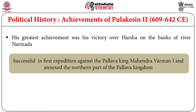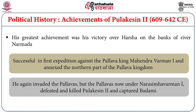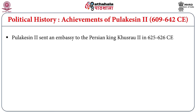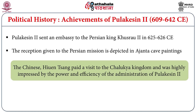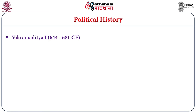The notable achievement of Pulakesi II which brought immense name and fame in the history of India is his victory over the great Harsha on the banks of the river Narmada, which became a boundary between these two dynasties. Pulakesi II also conducted a successful expedition over the Pallava king Mahendra Varman and occupied the northern portions of the Pallava kingdom. But in the second invasion, Pulakesi II lost his life at the hands of the Pallava king Narasimha Varman I. Pulakesi II also sent an embassy to the Persian king Khusru II in 625 CE. The reception given to the Persian mission is depicted in Ajanta cave paintings number 1. The Chinese pilgrim Xuanzang also paid a visit to the Chalukyan kingdom and was highly impressed by the power and efficiency of the administration of Pulakesi II. Thus Pulakesi II became one of the greatest personalities of India.